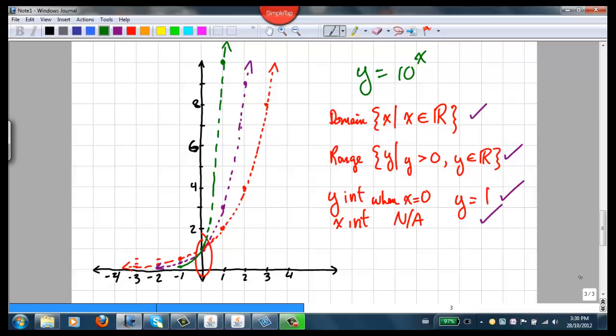But note that the domain, all possible values of x, the range, y is greater than 0, the y-intercept is still 1, and the x-intercept still doesn't exist. So it didn't matter if we had 2 to the x, 3 to the x, or 10 to the x. Any value of c here, remember we're talking about the exponential function, where our base is c. So any value of c that's greater than 1 will have the same domain, the same range, the same y-intercept, and the same non-existent x-intercepts.